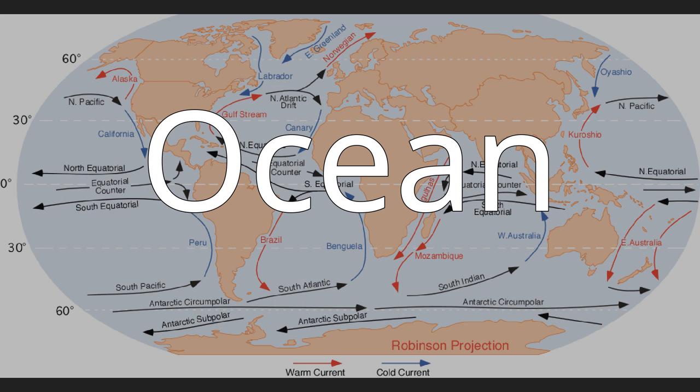The ocean, also the sea or the world ocean, is the body of salt water which covers approximately 71% of the surface of the Earth and contains 97% of Earth's water. Another definition is any of the large bodies of water into which the great ocean is divided.